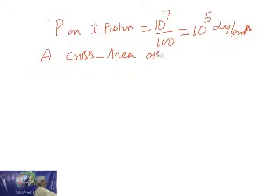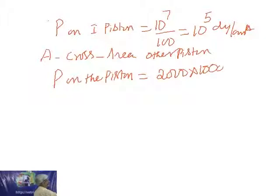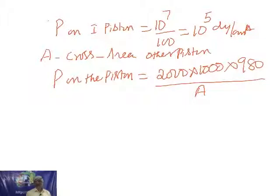The pressure on the other piston equals weight of truck divided by area: 2000 into 1000 into 980 divided by A — this is force divided by area. Force equals mass times gravity. 2000 ton is converted: multiplied by 1000 grams per kilogram. Since pressures are equal by Pascal's law — pressure at one limb always equals pressure at another limb — these two are equal.